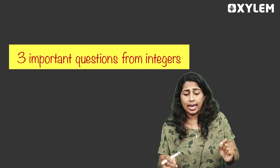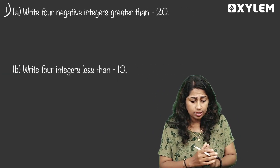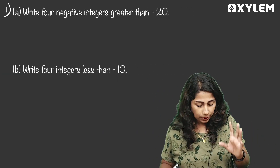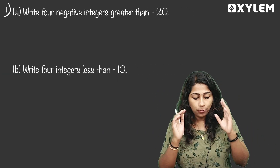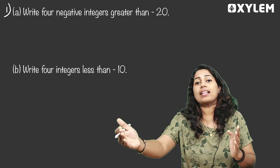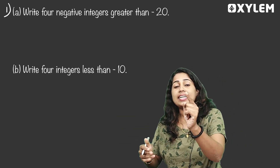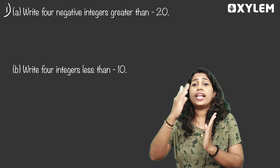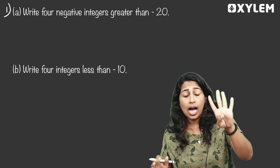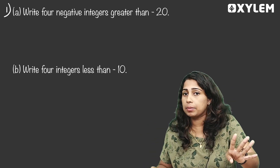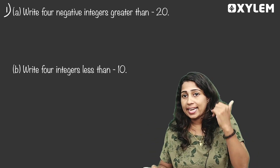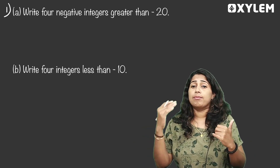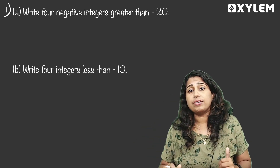The paper is ready and this is your first question. Write 4 negative integers greater than negative 20. Negative 20 — we need 4 negative integers greater than negative 20.